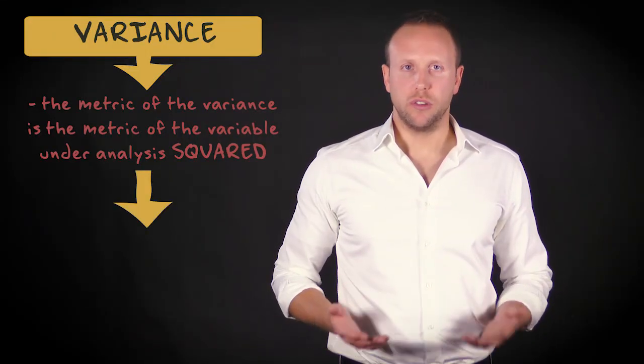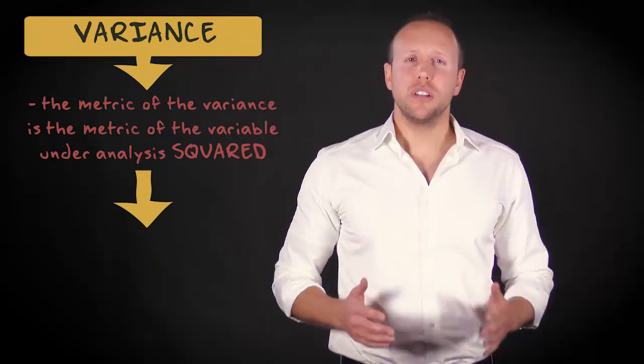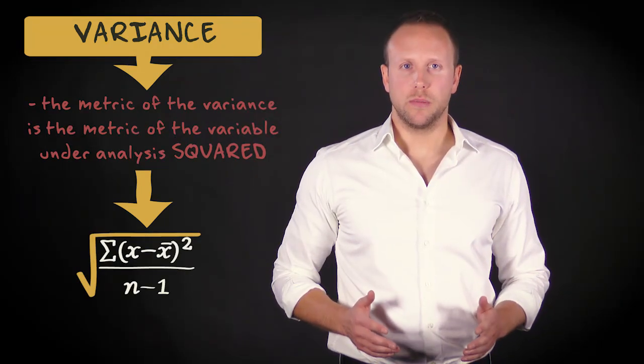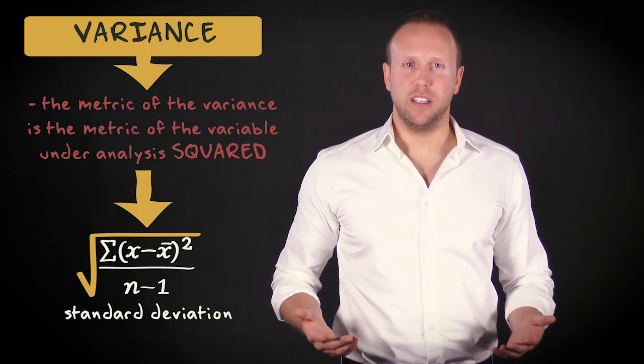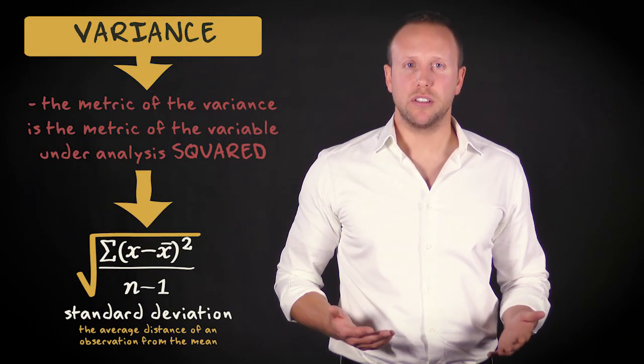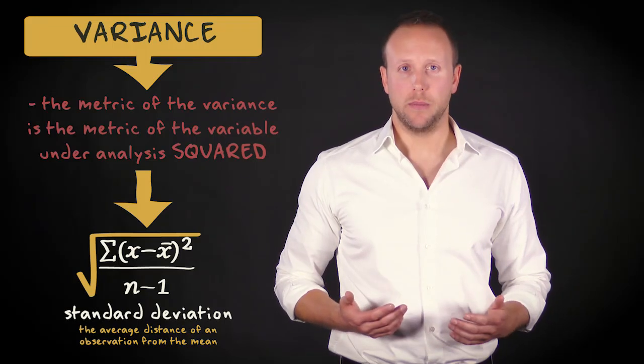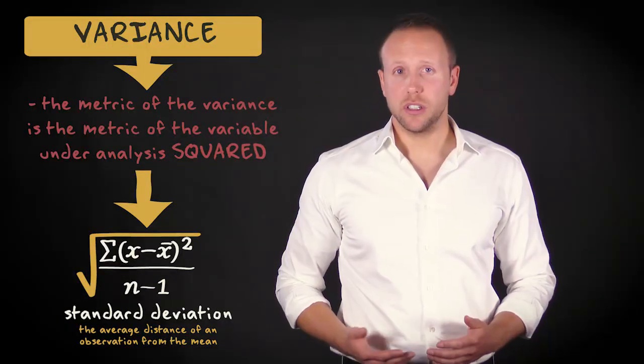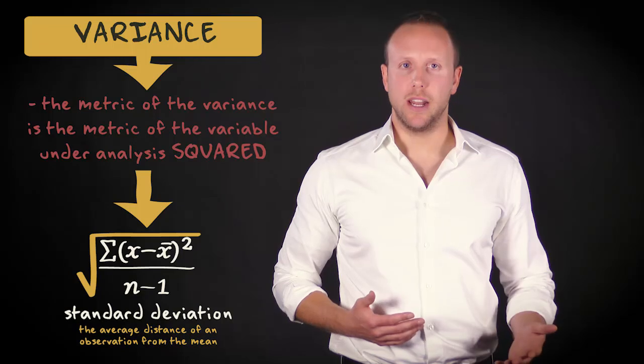There's a very simple solution to get rid of this problem. We just take the square root of the variance. We call what we get the standard deviation. The standard deviation can be seen as the average distance of an observation from the mean. The larger the standard deviation, the larger the variability of the data.